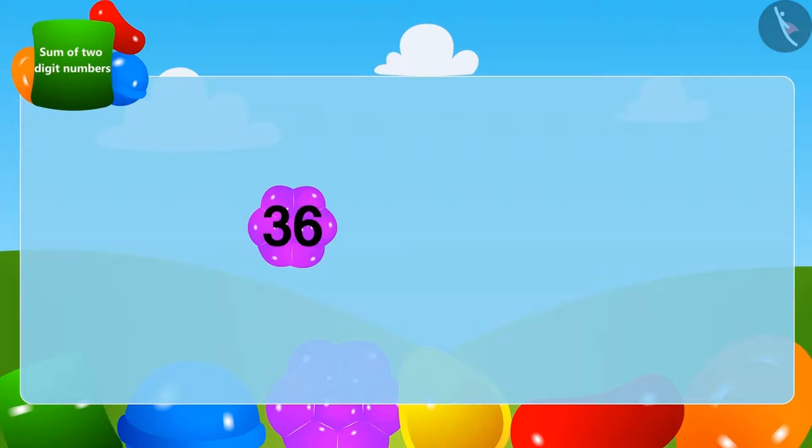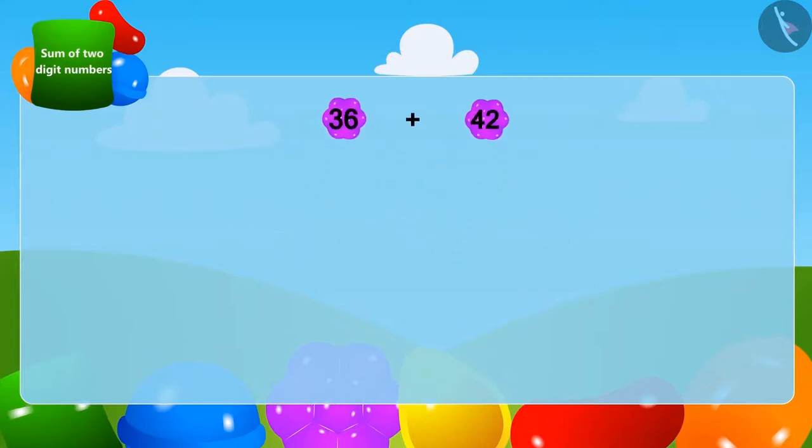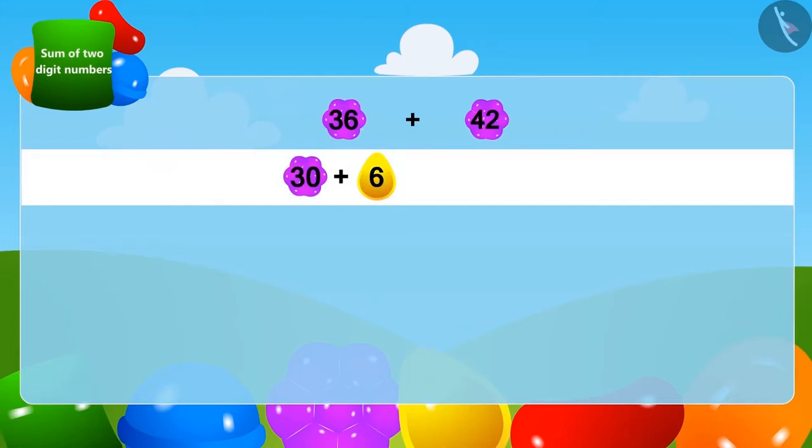The crow had a total of 36 stones to which he will add 42 stones given by Appu. We can write 36 by adding 6 to 30. And in the same way, we can write 42 by adding 2 to 40.